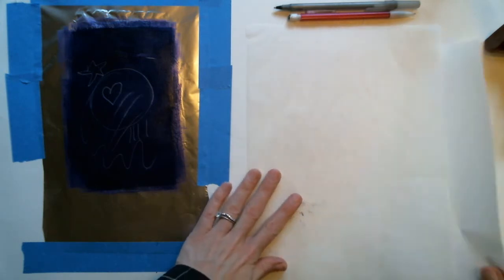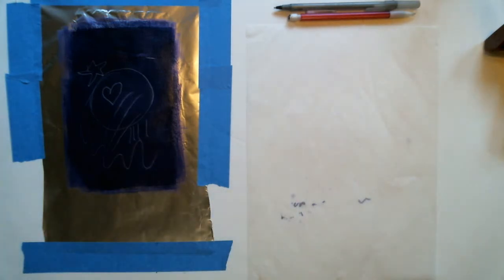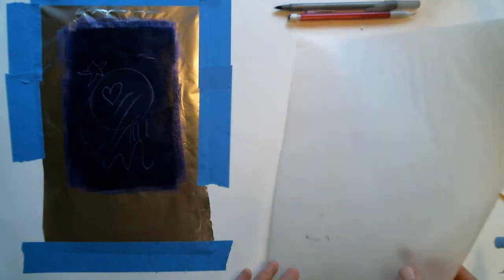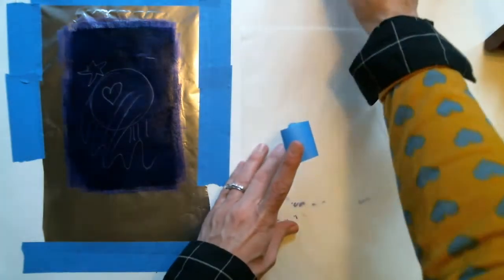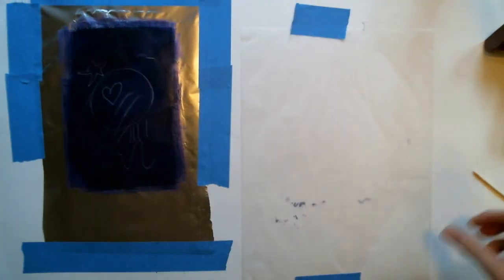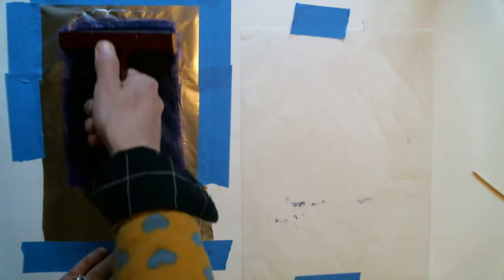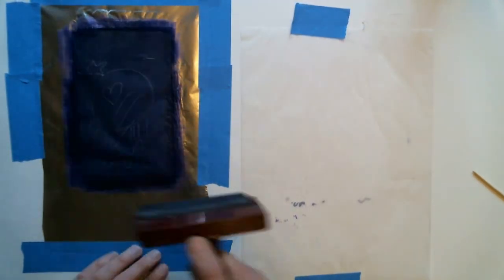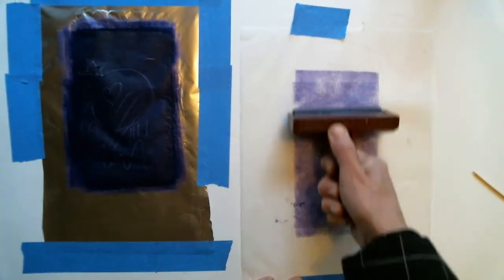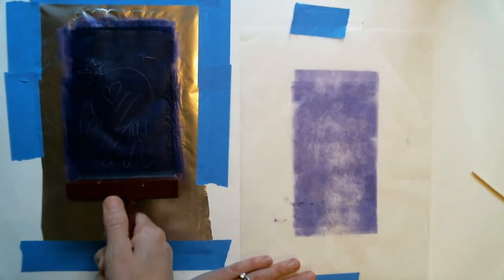In order to do the process where you lay an inked sheet of paper on top of your printing paper, you're going to take a piece of tracing paper and tape it down at the top and the bottom. Then you'll go to your inking slab, which you've already rolled out, charge the roller, and roll it over top of the tracing paper.